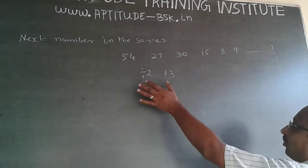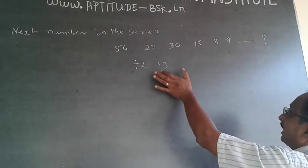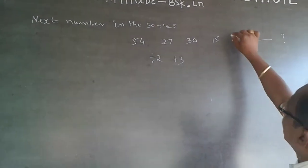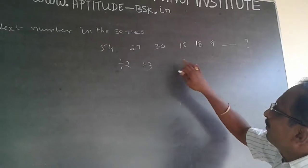So, there is a pattern now. Divide by 2 plus 3. We will have to check whether the same thing is happening. Divide by 2 plus 3. Now, this is 18 here.